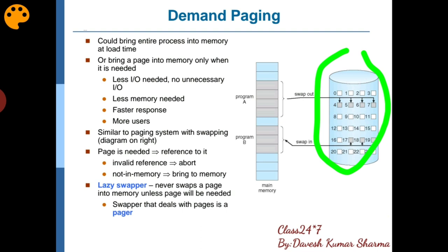जब हम इसको implement कर रहे हैं तो हमने pages form कर लिए। अब यह हमारी main memory है तो यहां पर जो जो pages required हैं वो swap in हो रहे हैं। अब suppose कि किसी page की requirement नहीं है तो हम लोग swap out कर देंगे और फिर next में जो इस page की requirement है उसको swap in कर देंगे। That means हम swap in swap out करके virtual memory को implement कर रहे हैं, and this swap in swap out process is known as demand paging.